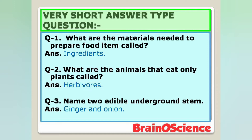Here are some important very short answer type questions. Question number one: What are the materials needed to prepare a food item called? Answer: Ingredients. We need ingredients to prepare our food. Question number two: What are the animals that eat only plants called? Answer: Herbivores. Herbivores are the animals that eat only plants.